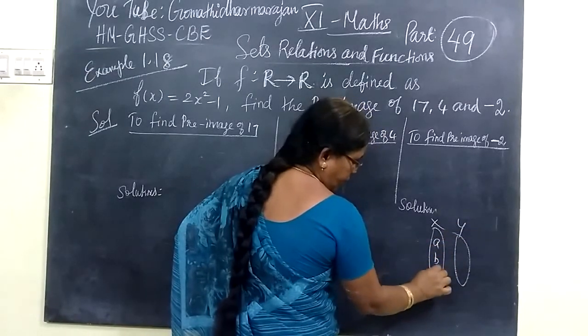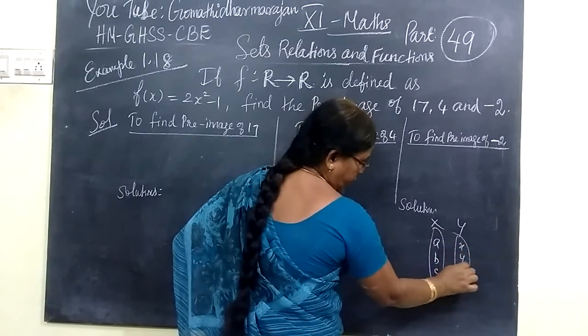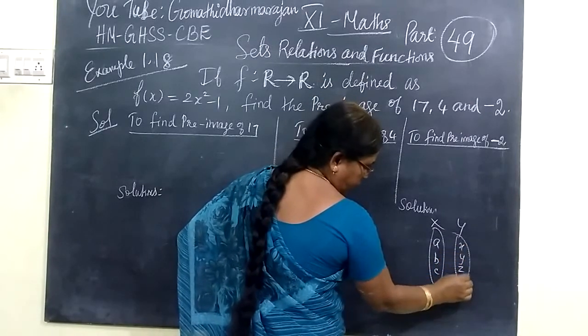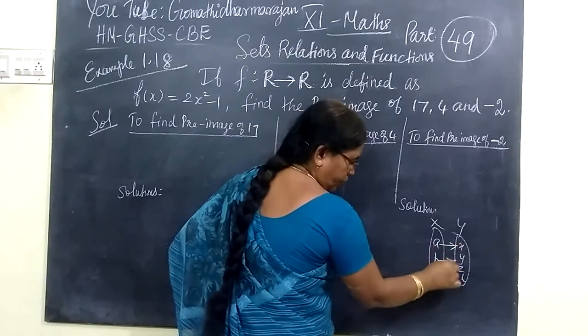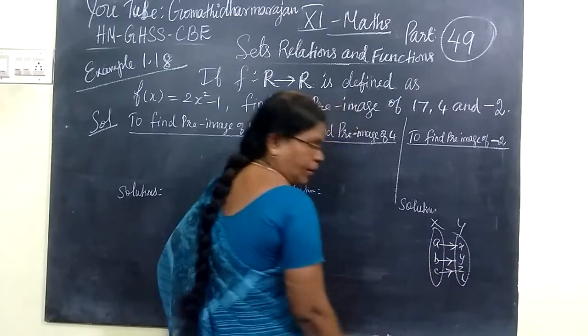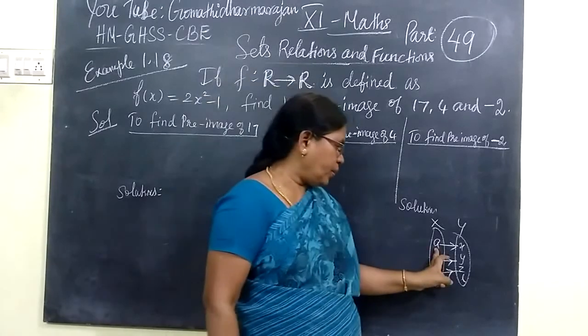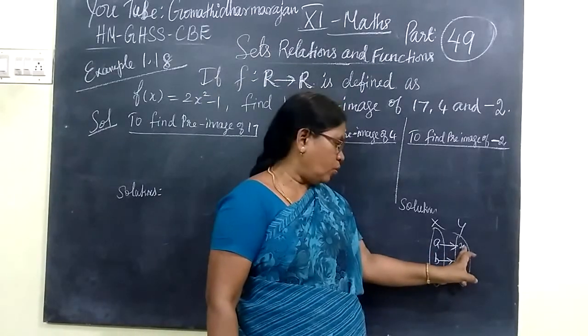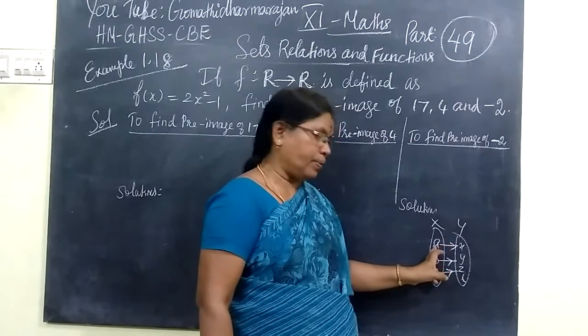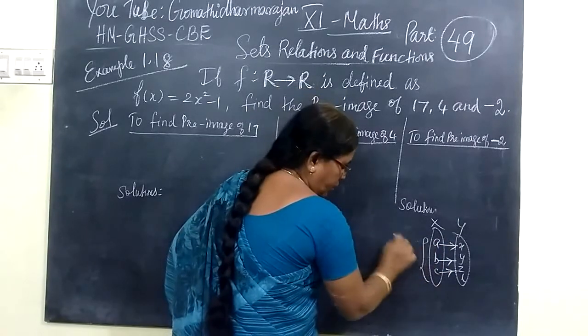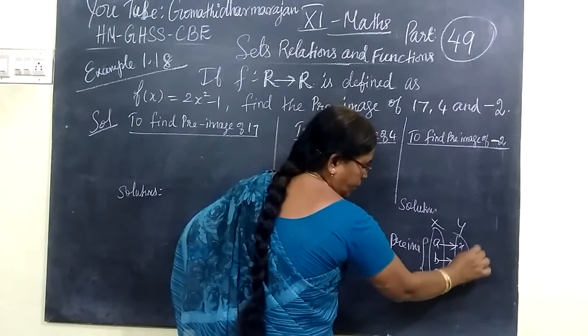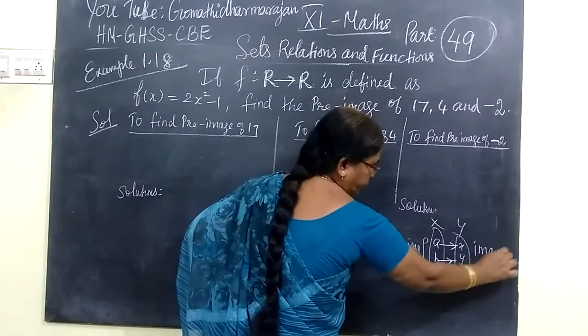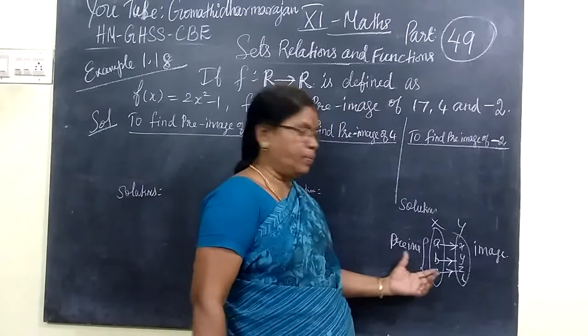If we have a mapping where element A maps to X, then X is the image of A, and A is the preimage of X. Here Y is called the image, and this is the preimage of the image.